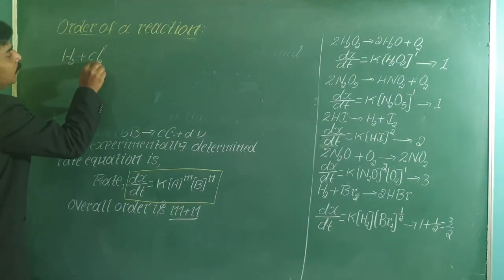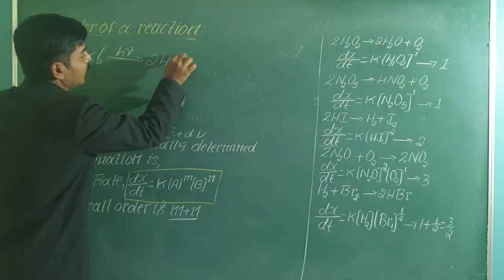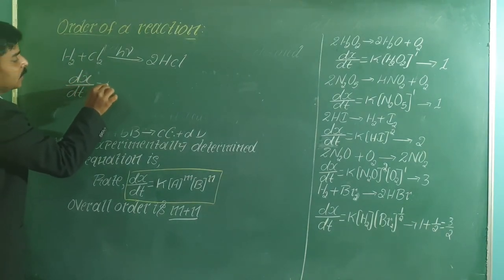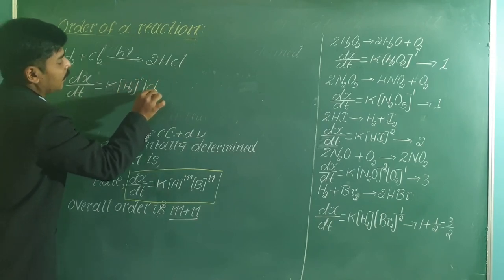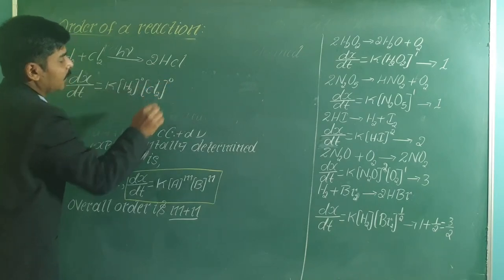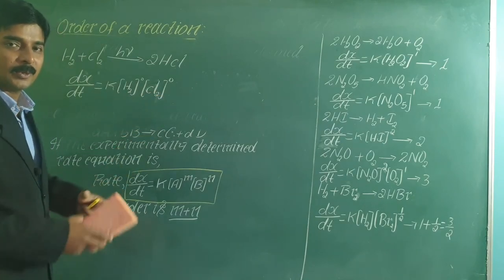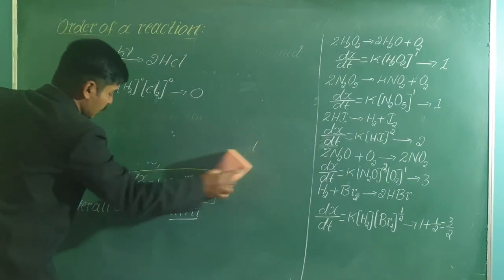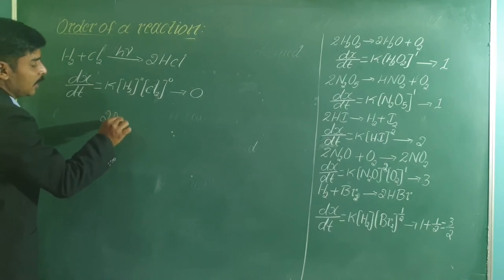For the reaction H2 + Cl2 → 2HCl in the presence of sunlight, the experimentally determined rate expression shows the order with respect to H2 is 0 and with respect to Cl2 is 0, so the overall order is 0 — a zero order reaction.